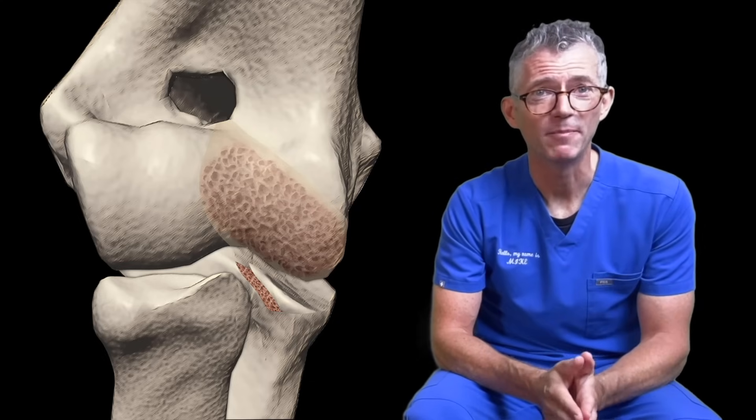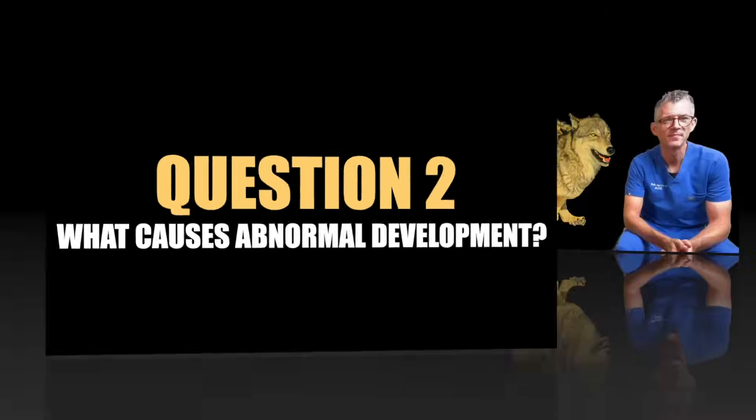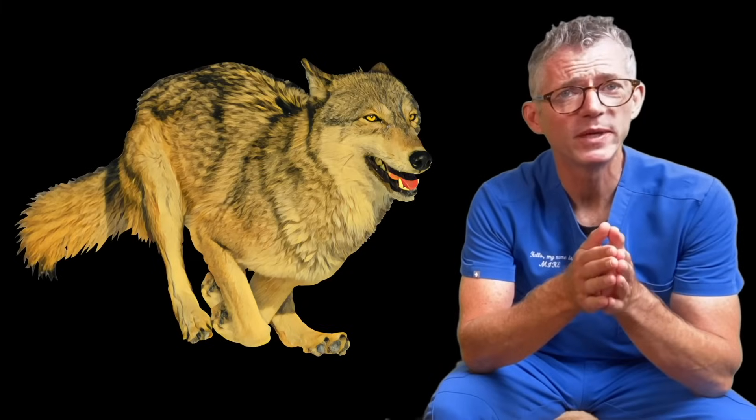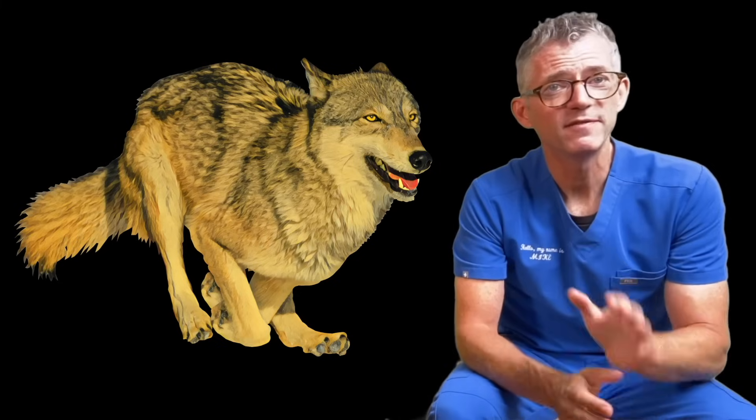Which brings us to question two: what causes abnormal development? Before humans domesticated dogs, they were ruled by Darwin's laws of evolution. Only the fittest survived, and nature had no patience for genetic frailty. If a young wolf had dysplastic joints, they couldn't hunt, couldn't keep up with the pack, and couldn't reproduce — so harmful genes died with their owners. Before man was involved, nature had created a ruthlessly efficient breed improvement programme.